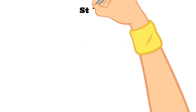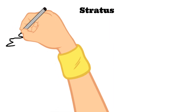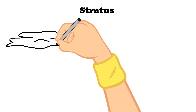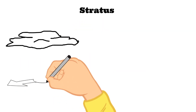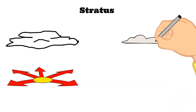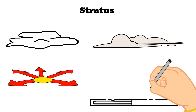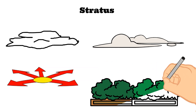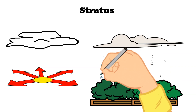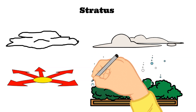Next up, let's talk about stratus clouds. These are those uniform grayish clouds that cover most of the entire sky. They sometimes look like fog, but fog that doesn't reach the ground. The type of weather that happens when stratus clouds are present can range from a light mist to a drizzle of rain.